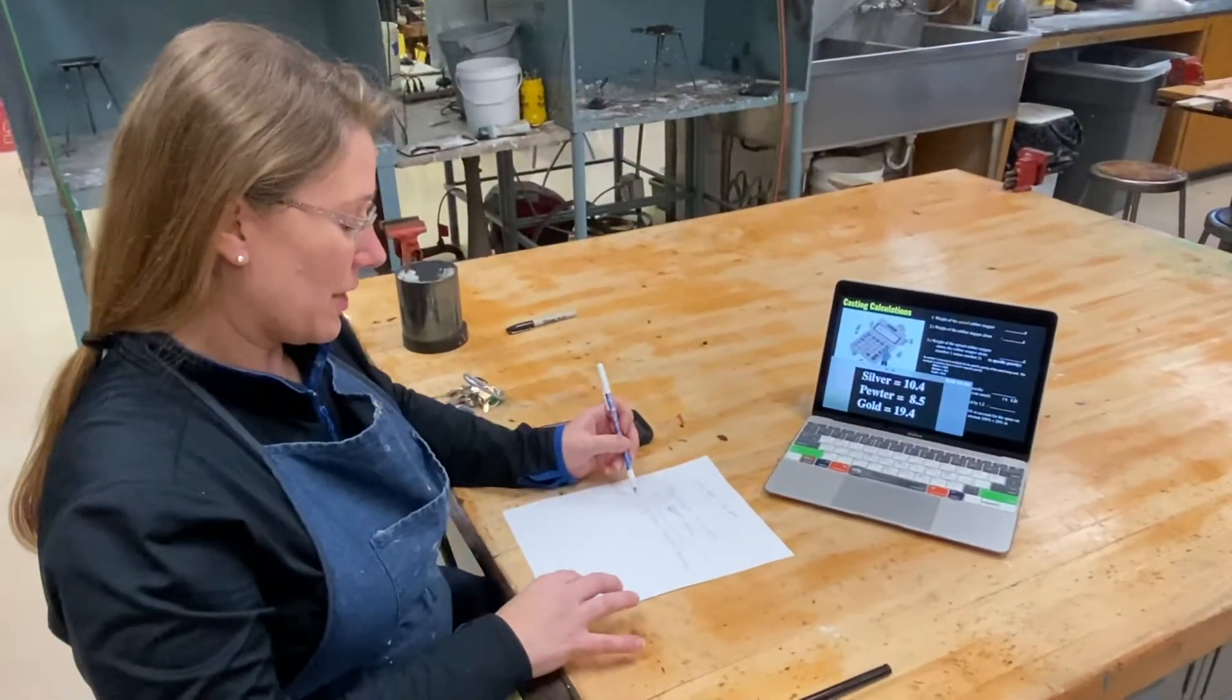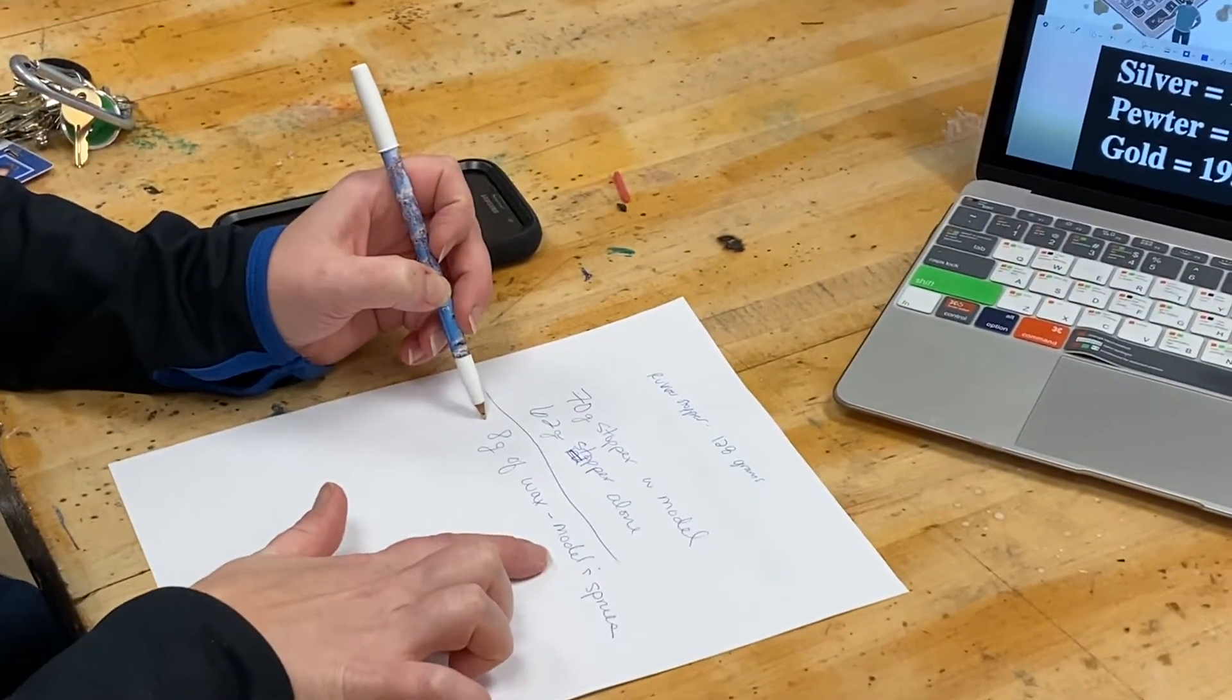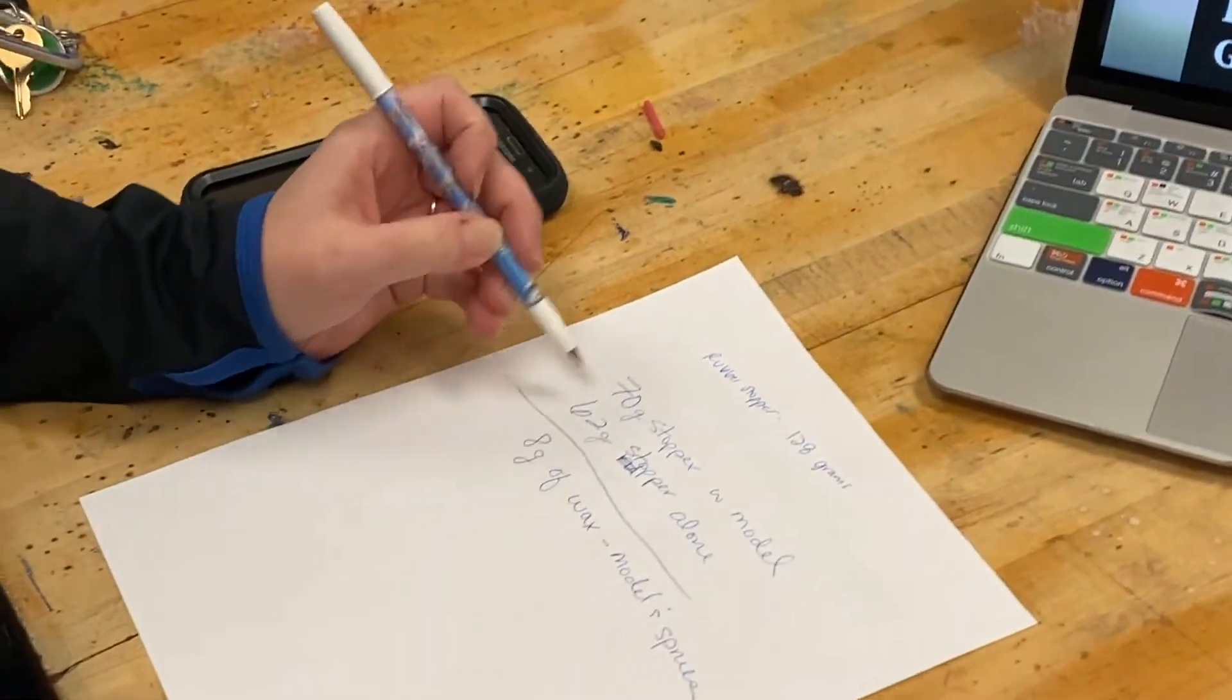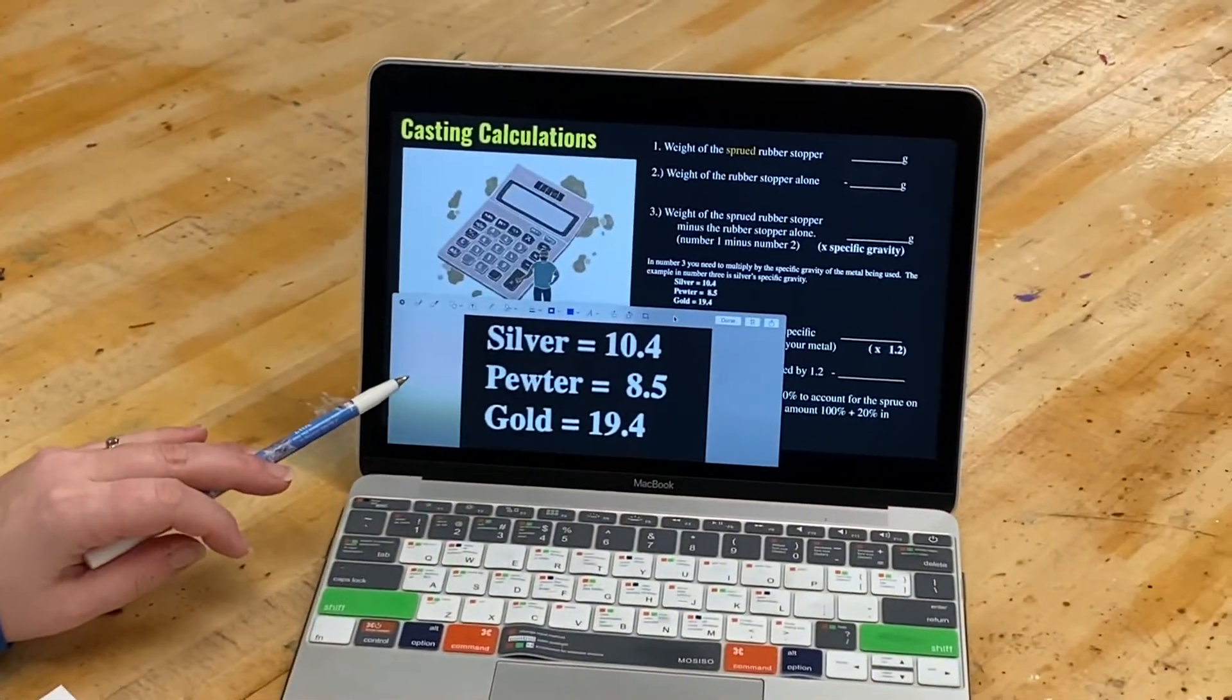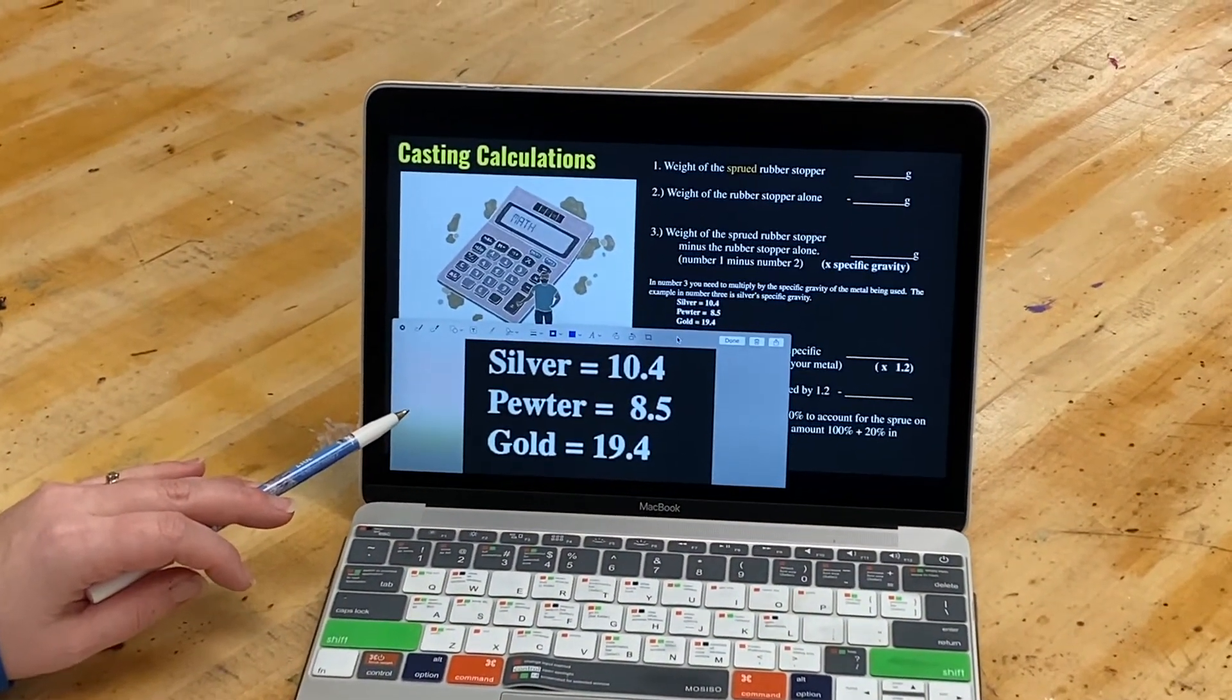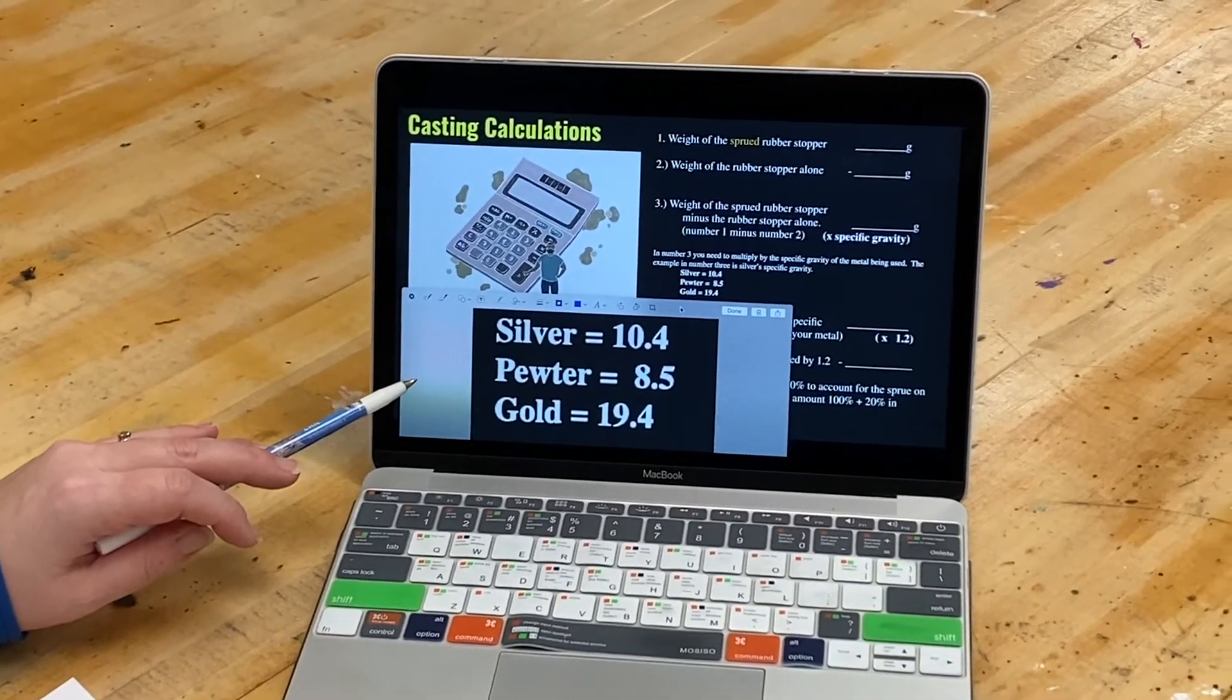So now that I have how much my wax is, and again, it's the model and the sprues, I've got 8 grams. When I subtracted those two amounts from earlier, I need to actually go back and reference my slide presentation because I need the specific gravity of the metal that I'm casting with.